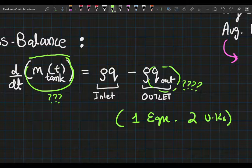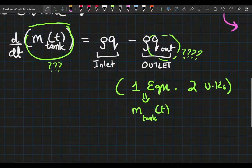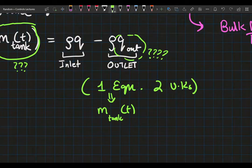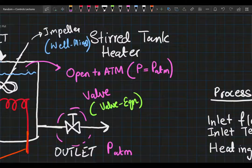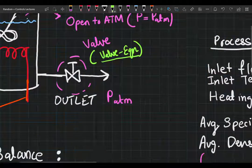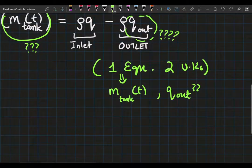The one equation that we have is going to give us the mass in the tank at any given time, but we also have another unknown. Our Q_out needs to be sorted out, and remember I said we're going to be using a valve equation.